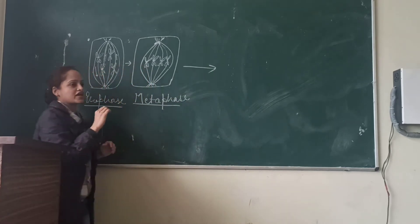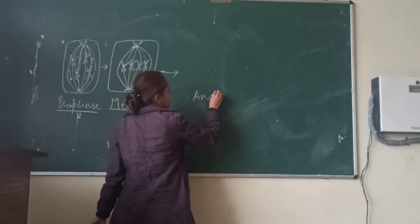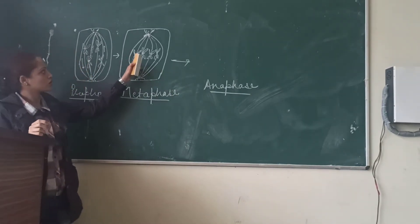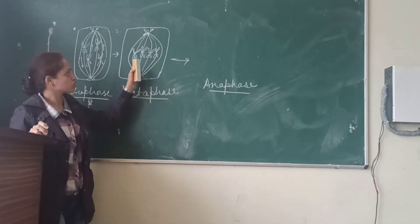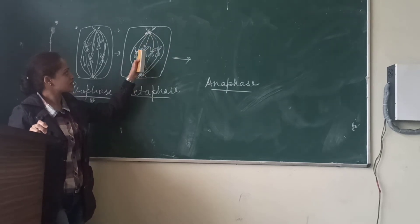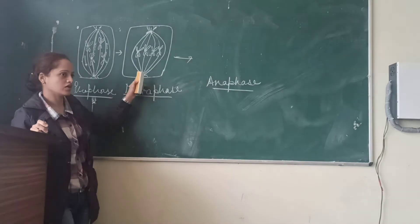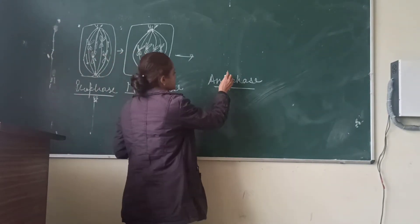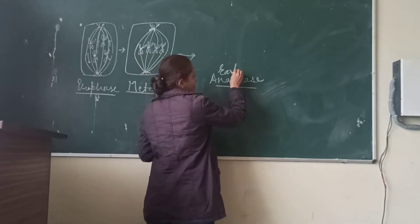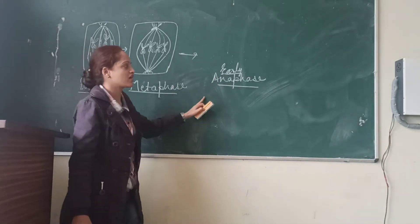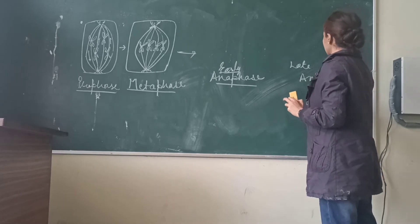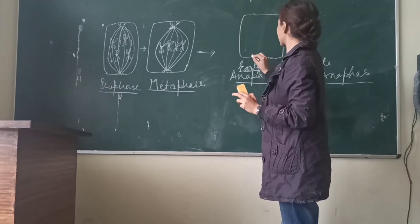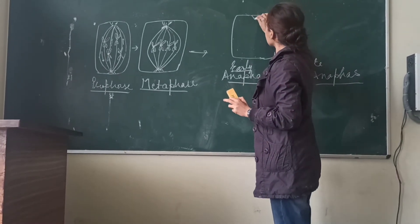The next phase is anaphase. In anaphase, the chromosomes start separating. Anaphase has two sub-phases: early anaphase and late anaphase. In early anaphase, the chromosomal spindle fibers start pulling the chromatids toward the opposite poles.